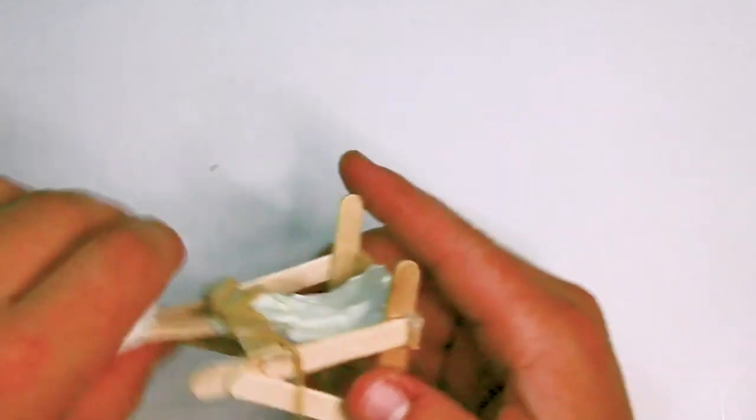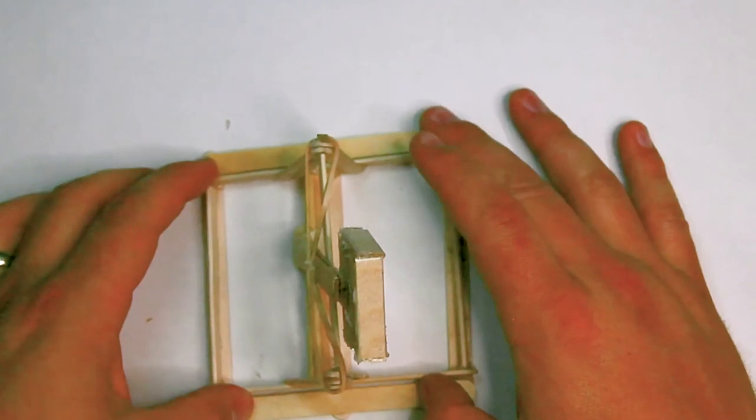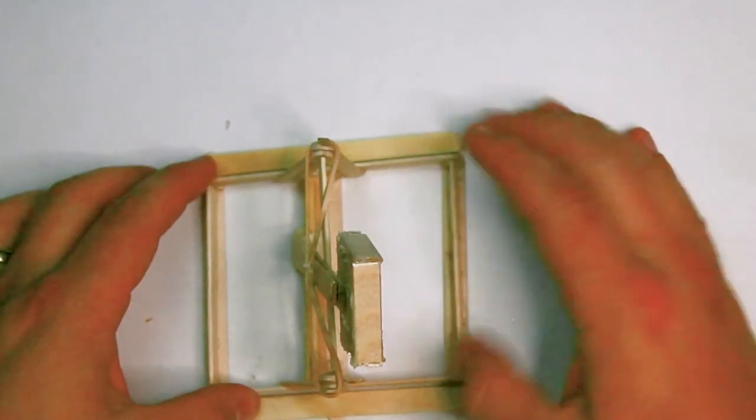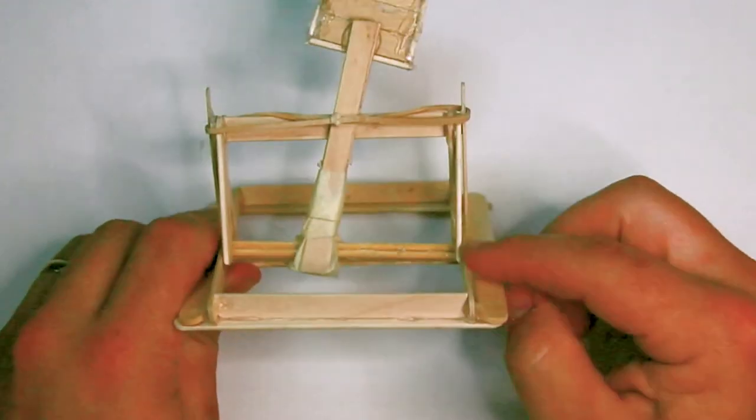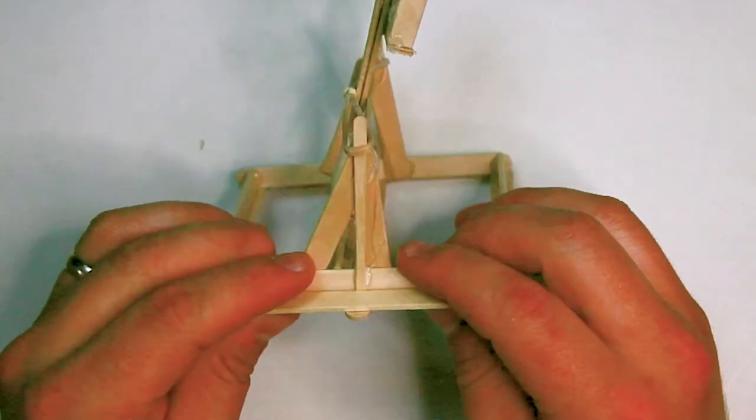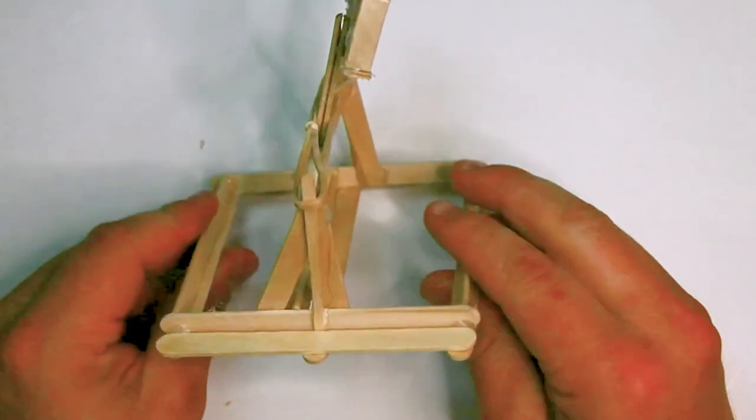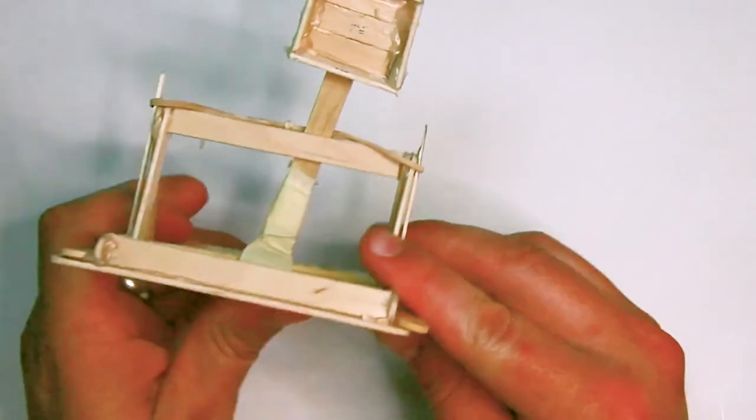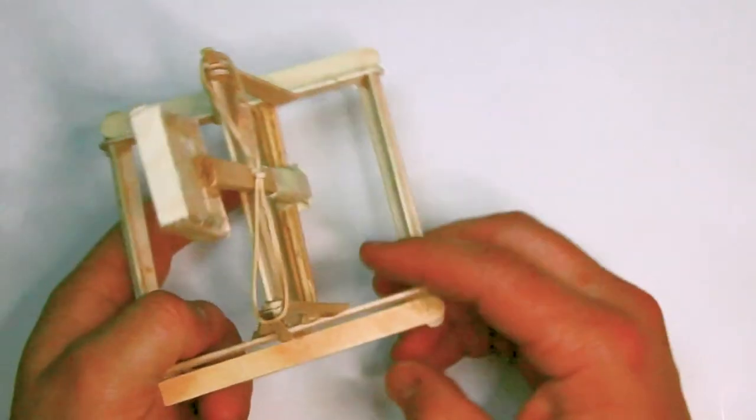Some kids have found success in starting from the base. This group started with a square base and put popsicle sticks up and built up from the square base. This one worked really well. So you're allowed to do whatever you like. This video is kind of to give you a good starting point. Some good thoughts to think about. And good luck making your catapult.